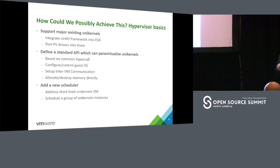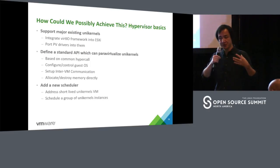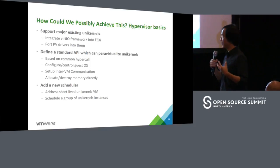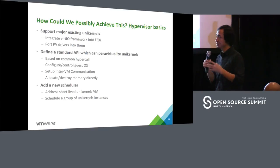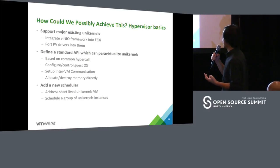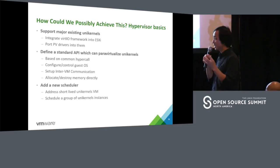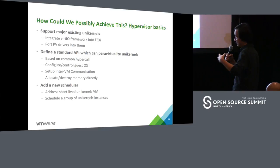For parallelization, we have VMCI — virtual machine communication interface — and we want to expand that to construct more parallel APIs. We also need a new scheduler for VMs and sometimes for grouped unikernel instances, because in serverless cases a unikernel might just provide a service and then immediately shut down. From the hypervisor perspective, we want to support major existing unikernels by integrating VirtIO into our ESXi hypervisor and importing VMCI into existing unikernels. So far we have two unikernels that support ESXi: OSv and IncludeOS. We also need to define a new API based on the hypercore to configure and control guest OS, set up inter-VM communication, and manage memory — with a new scheduler for VM and grouped unikernel instances.